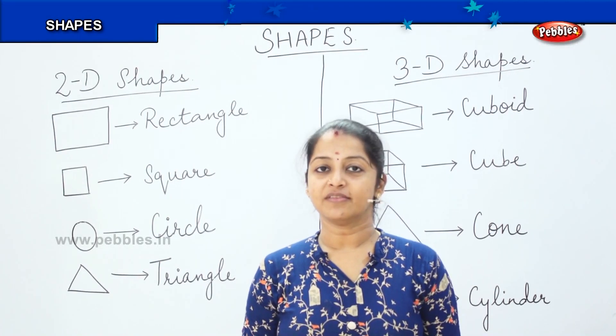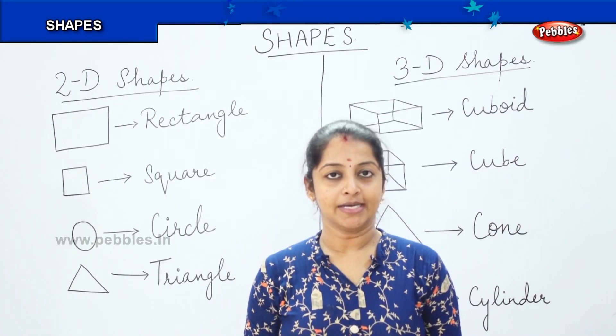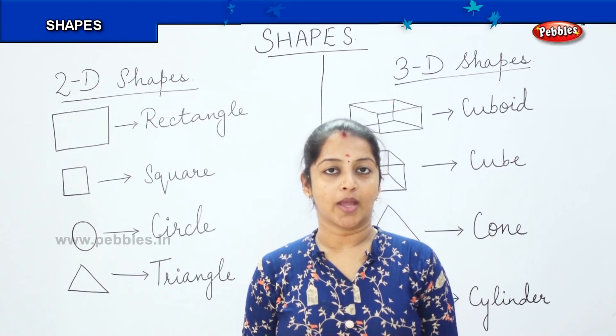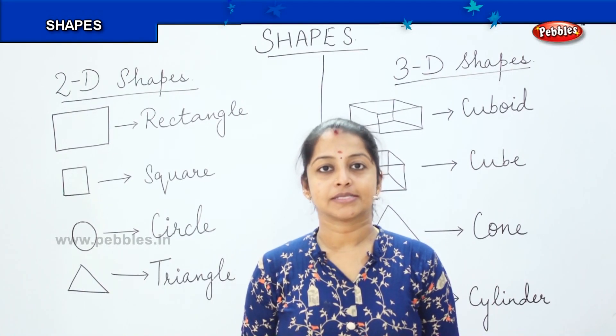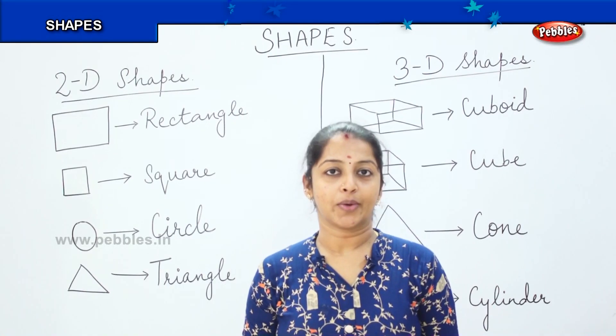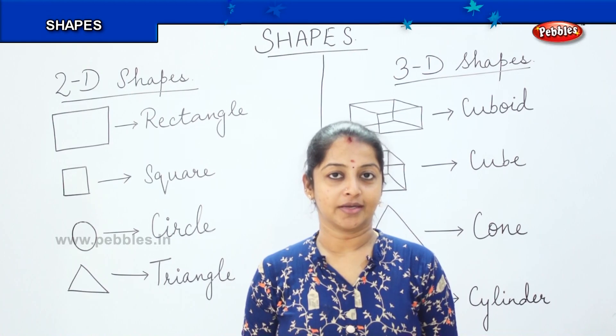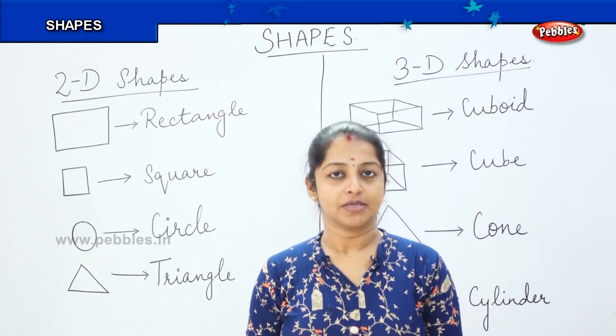We see a lot of shapes around us, right? It can be a square, a rectangle, a circle, a triangle, cuboid, dice and so many shapes, correct?